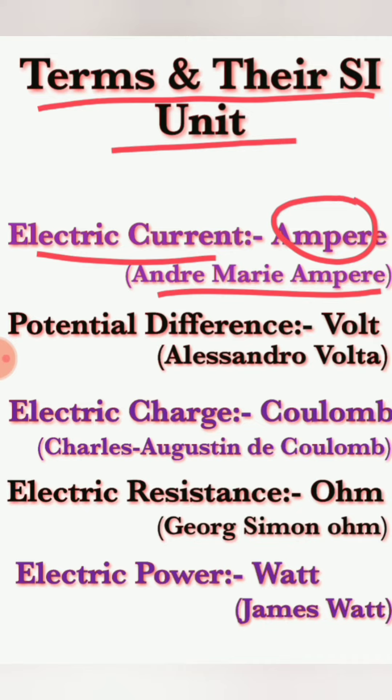The second term is called potential difference, which is measured in a unit called volt, named in honor of the scientist Alessandro Volta.